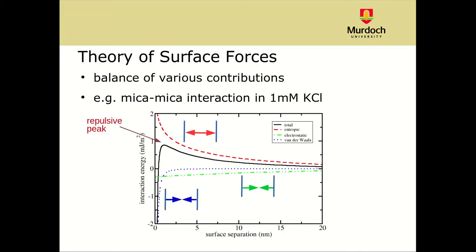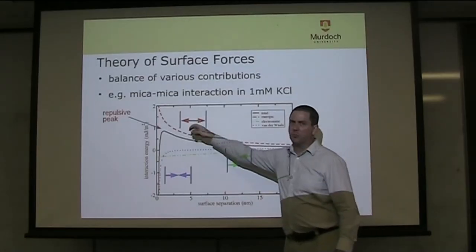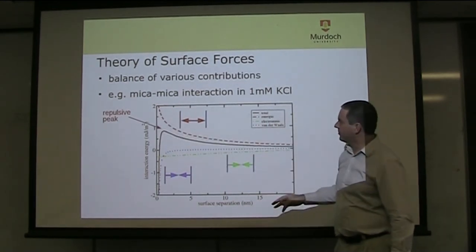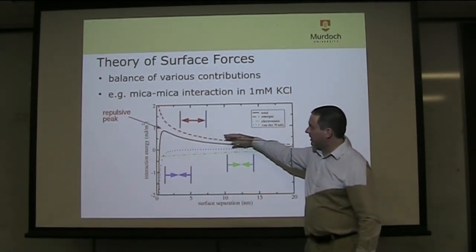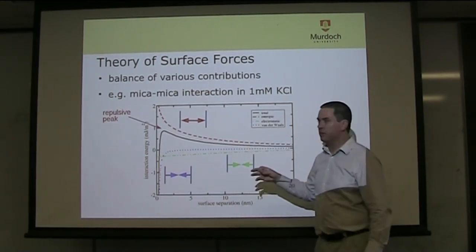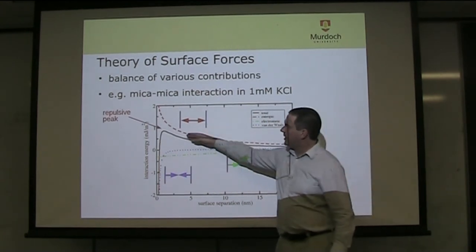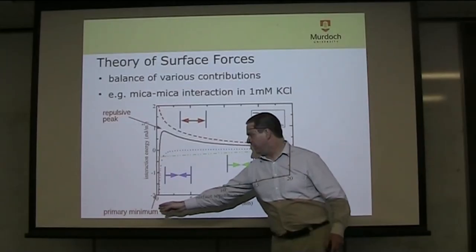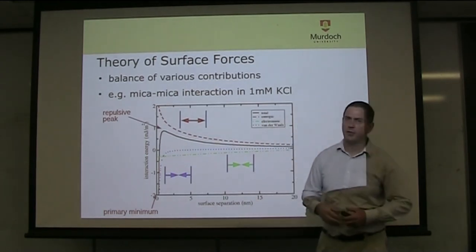The main feature of the total force is a repulsive peak. Depending on the kinetic energy at a given temperature, the particles may or may not be able to push past that repulsive peak. If the kinetic energy is low enough, we'll have a stable colloidal suspension. If the repulsive peak is low enough, the particles can push into the primary minimum driven by van der Waals interaction — that's when we have strong aggregation.